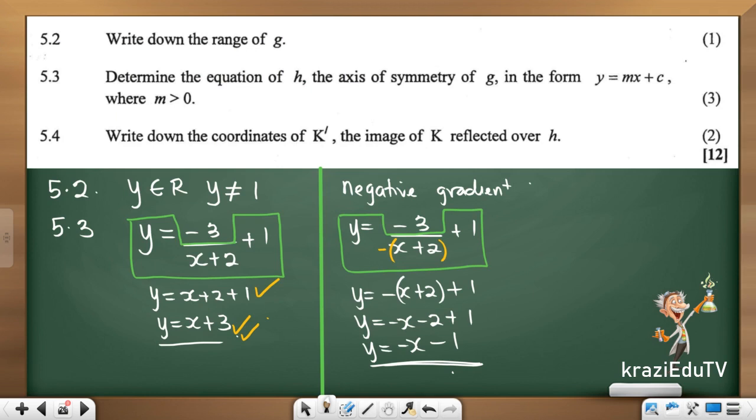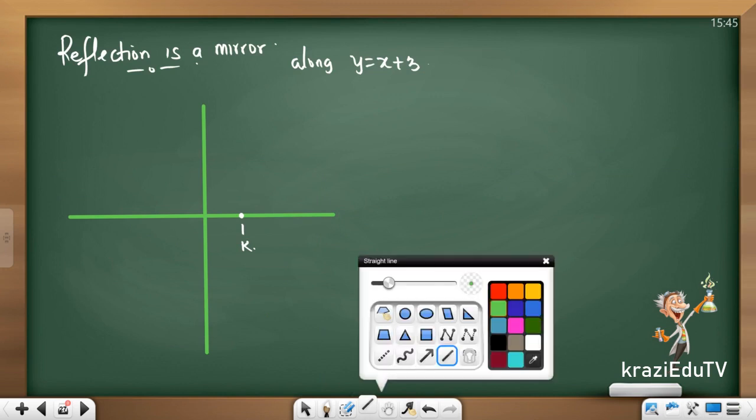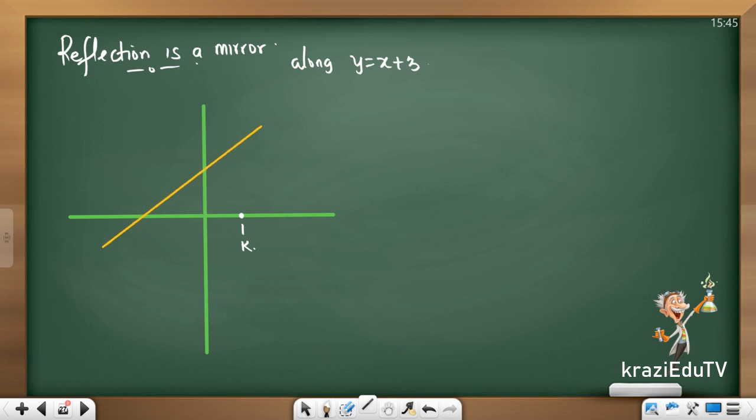We want to reflect this along the line. We're reflecting along y equals to x plus 3 because that's what we are told. Reflected over h. And our h is x plus 3. That's a lovely gradient there. If we were to sketch that line quickly, check what we are going to have. And this would be 3. So, this is y equals to x plus 3, which is our h of x. We want to reflect this point over that line. Reflection is a mirror.